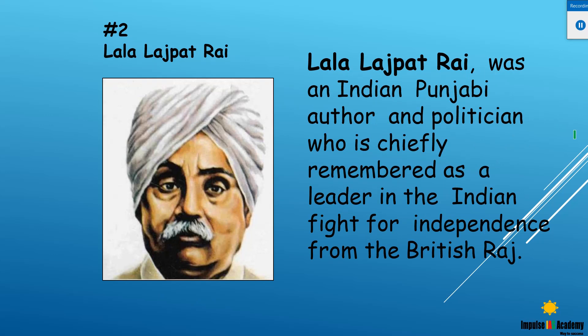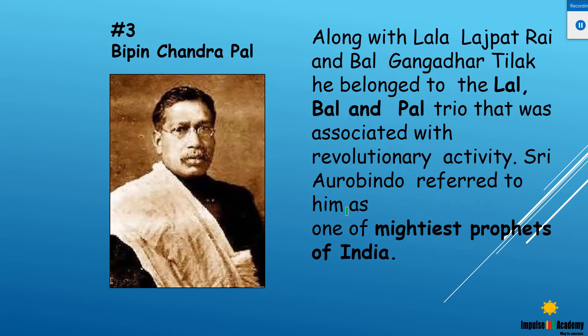Lala Lajpat Rai was an Indian Punjabi author and politician who played a very important role during the Simon Commission protests in 1928 and was a prominent extremist leader. The next leader was Bipin Chandra Pal. Together, these three — Lala Lajpat Rai, Bal Gangadhar Tilak, and Bipin Chandra Pal — were known as the 'Lal, Bal and Pal' trio. They were known for their revolutionary activities, and Sri Aurobindo called them the 'mightiest prophets of India.'